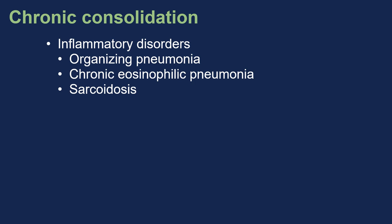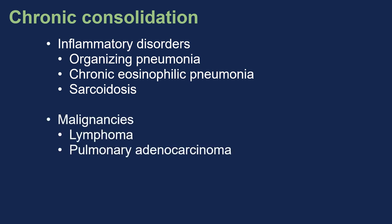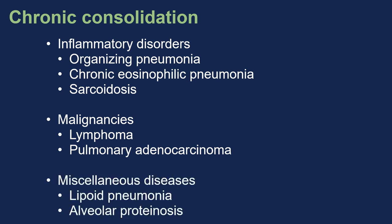First, inflammatory disorders such as organizing pneumonia and chronic eosinophilic pneumonia — these are probably a spectrum of the same disease because they share significant histologic, radiologic, and clinical features. Sarcoidosis, when the granulomas become confluent, can produce areas of consolidation, often with small nodules in association. Then malignancies such as lymphoma — either primary pulmonary or secondary — pulmonary adenocarcinoma, and miscellaneous diseases such as lipoid pneumonia and alveolar proteinosis.